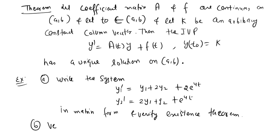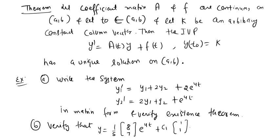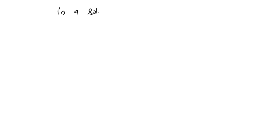Part (b): verify that y = (1/5)*[8, 7]*e^(4t) + c1*[1, 1]*e^(3t) + c2*[1, -1]*e^(-t) is a solution of the system.